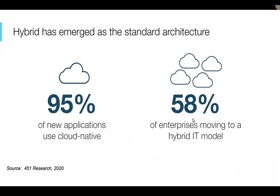Enterprises today have a cloud-first approach when implementing new technology initiatives, shedding legacy systems and processes to increase agility in a competitive digital market. Leveraging the flexibility of a cloud infrastructure introduces operational efficiencies unattainable in an on-prem data center. 451 Research just released a study finding that 95% of new apps are built in the cloud. Organizations not only realize operational efficiencies of infrastructure as a service, but they are leveraging unprecedented observability into product usage to make data-driven decisions faster than ever. In that same survey, 58% of enterprises are moving to a hybrid IT model, which is emerging as the standard architecture and organizing principle of their IT estates.